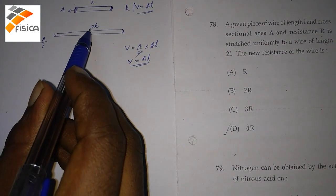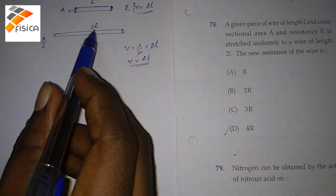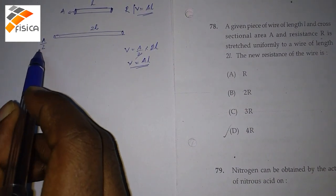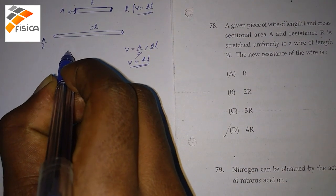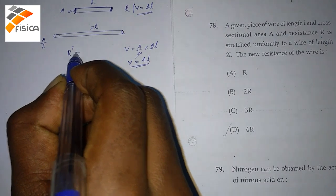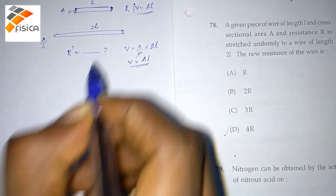So if the length of the wire becomes 2L, the area of cross-section will reduce to A by 2. Now, we have to find out the resistance of the stretched wire.